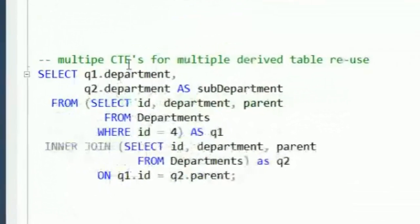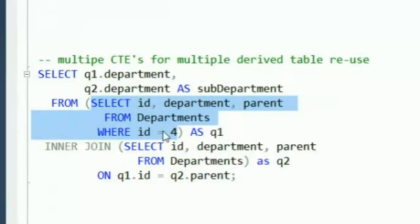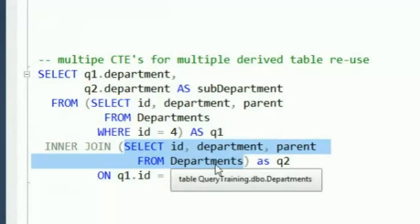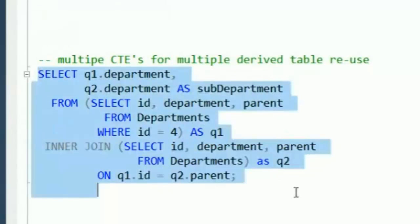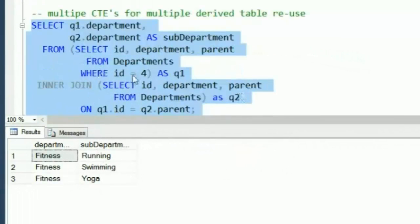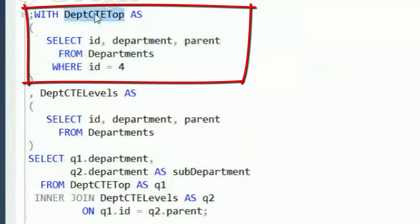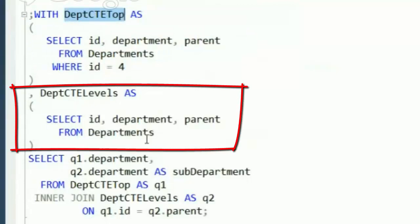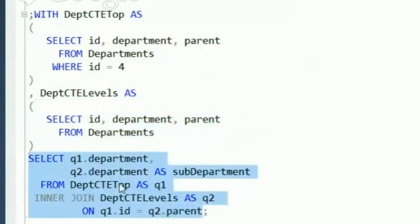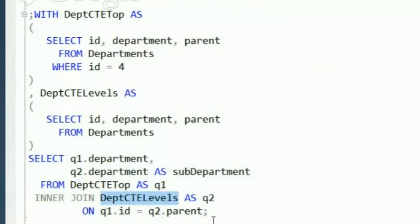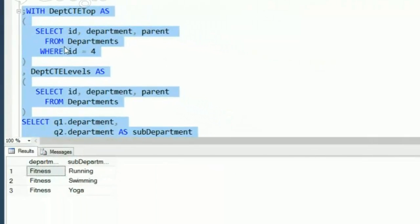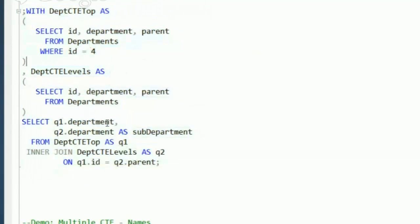Looking at an example with multiple CTEs replacing subqueries: the non-CTE version selects items with department ID of four (Fitness) and joins to get subcategories — Running, Swimming, Yoga. Converting to CTEs: DepartmentCTETop for the top level, DepartmentCTELevels for everything below, then the same join statement referencing both CTE names. Running this gives the exact same result set — zero performance change — but the code is cleaner and more readable.